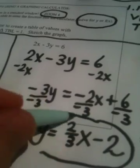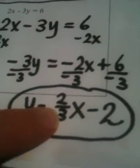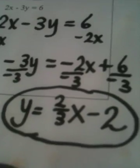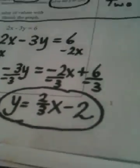So we have to put this into our calculator to graph it. The slope is 2 thirds and the y intercept is negative 2. You should remember the form y equals mx plus b.